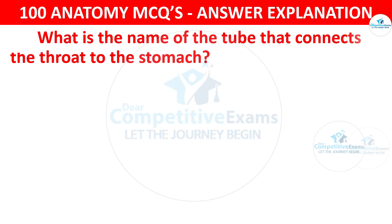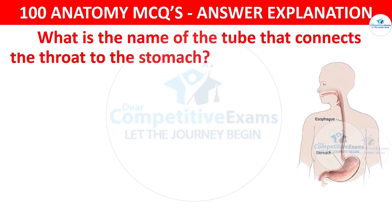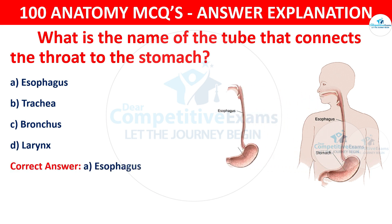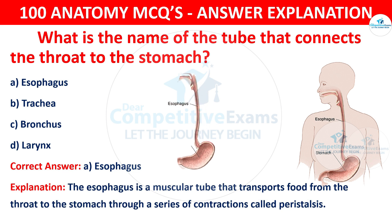Question number 98: What is the name of the tube that connects the throat to the stomach? The options are: Esophagus, Trachea, Bronchus, or Larynx. The correct answer is A — esophagus. The esophagus is a muscular tube that transports food from the throat to the stomach through a series of contractions called peristalsis.